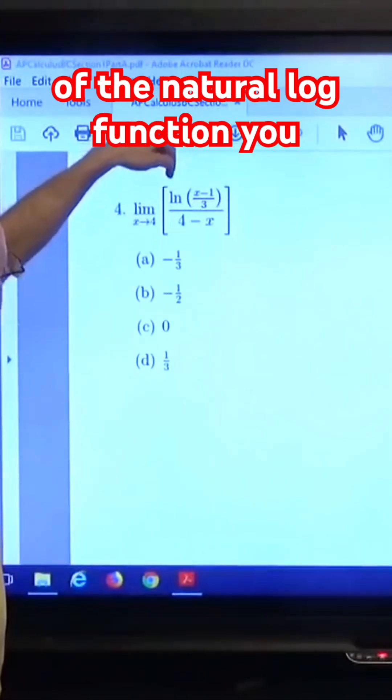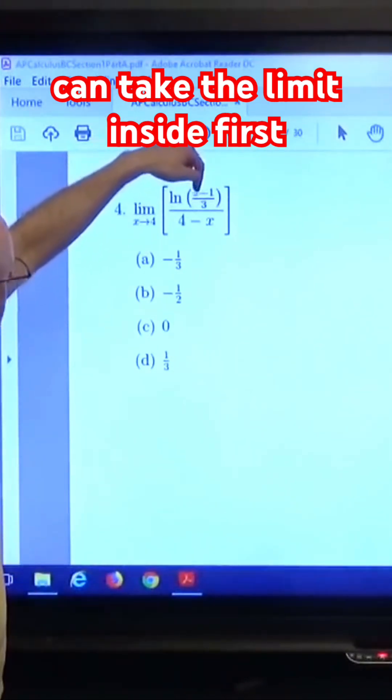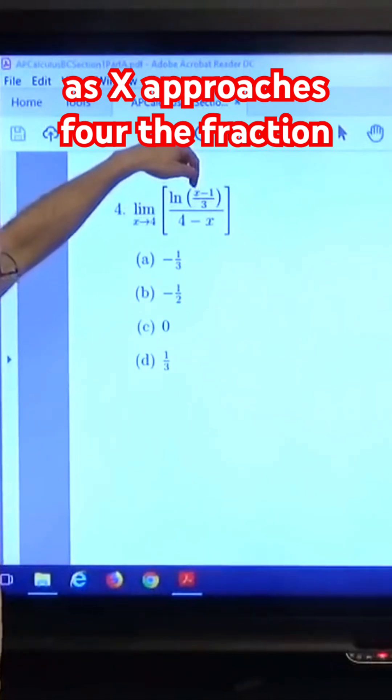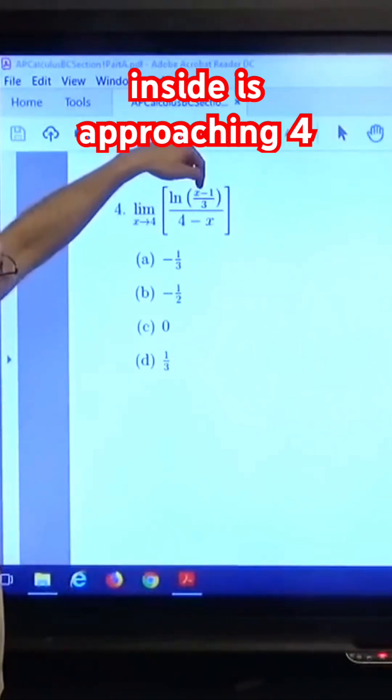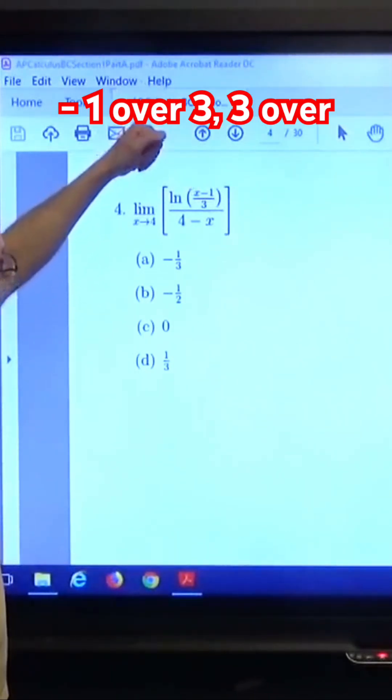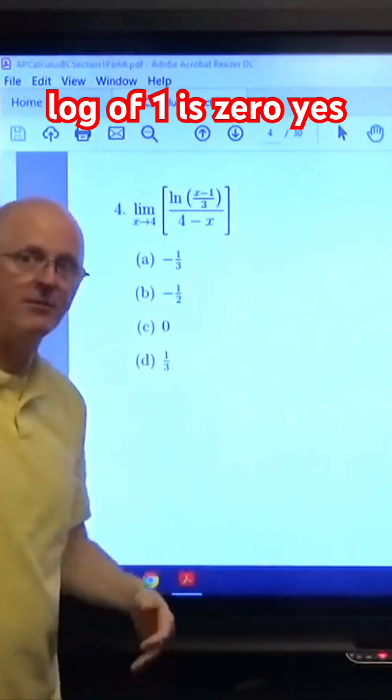Well, by continuity of the natural log function, you can take the limit inside first as x approaches 4. The fraction inside is approaching 4 minus 1 over 3. 3 over 3 is 1, and the natural log of 1 is 0.